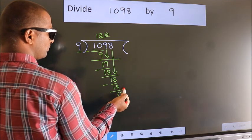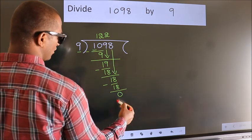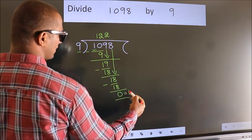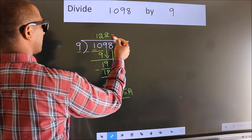No more numbers to bring down. So we stop here. This is our remainder. This is our quotient.